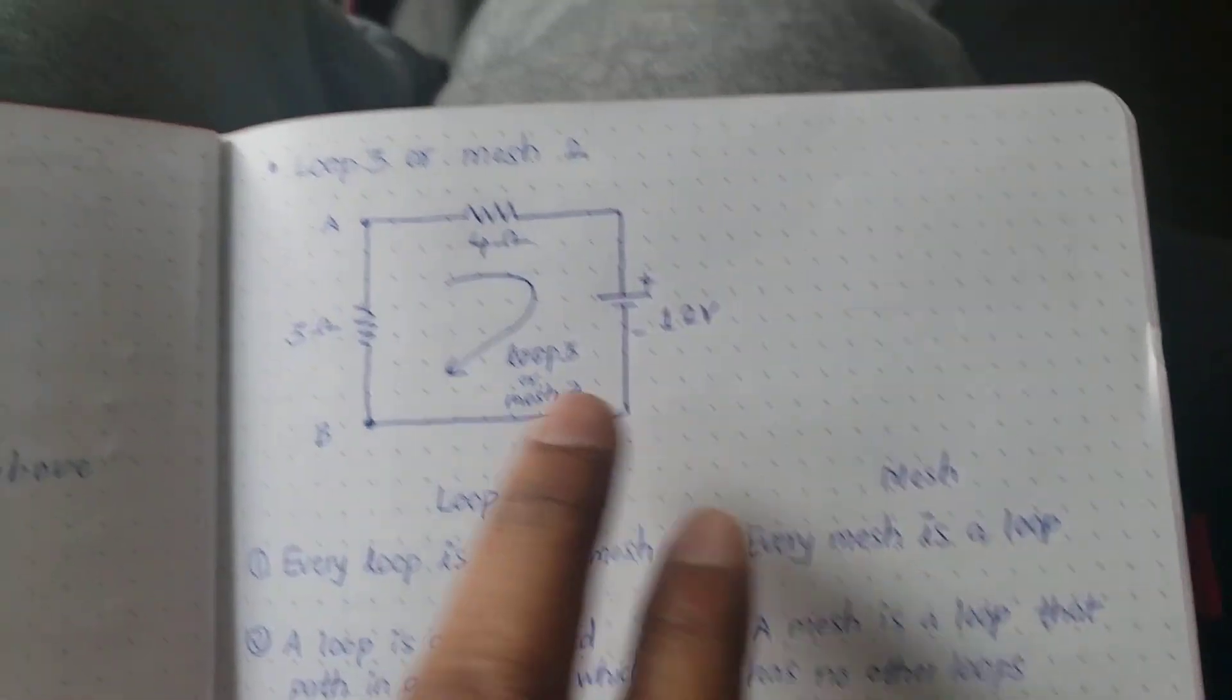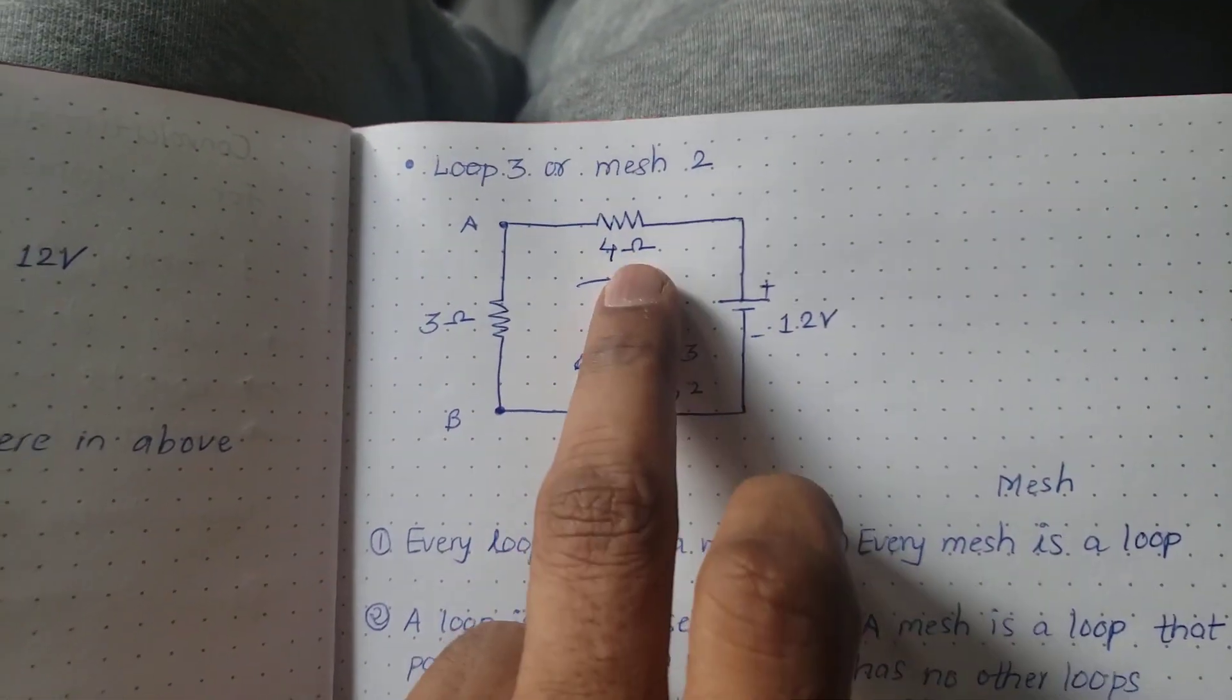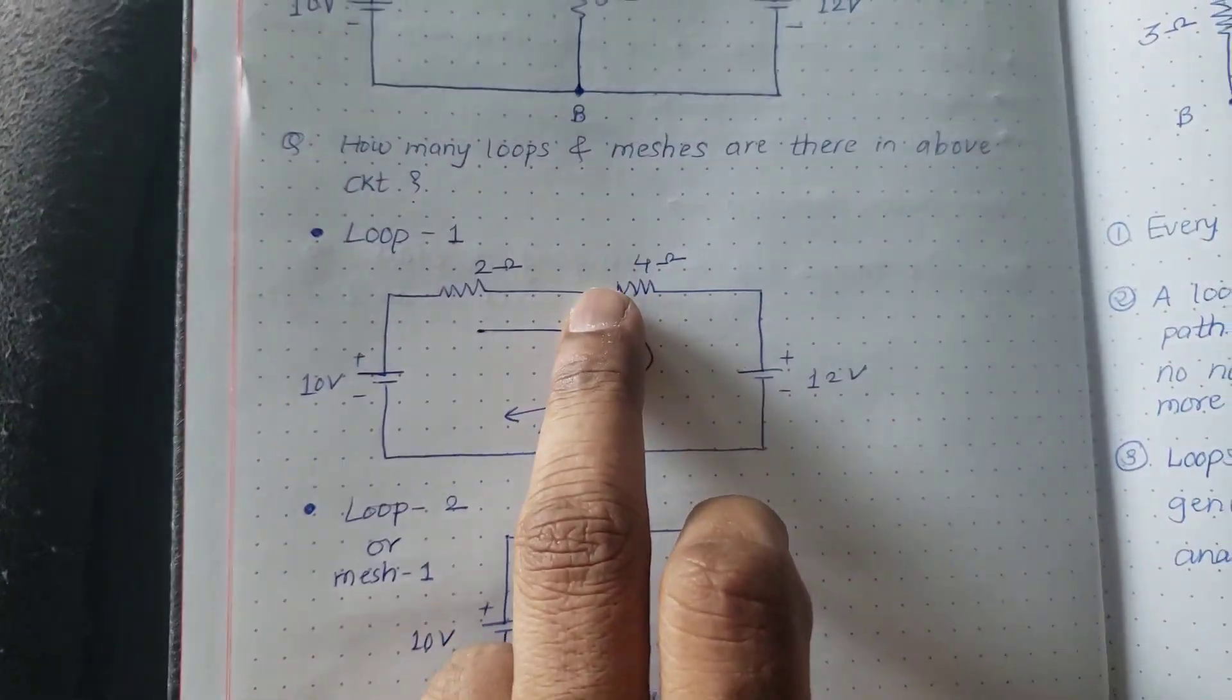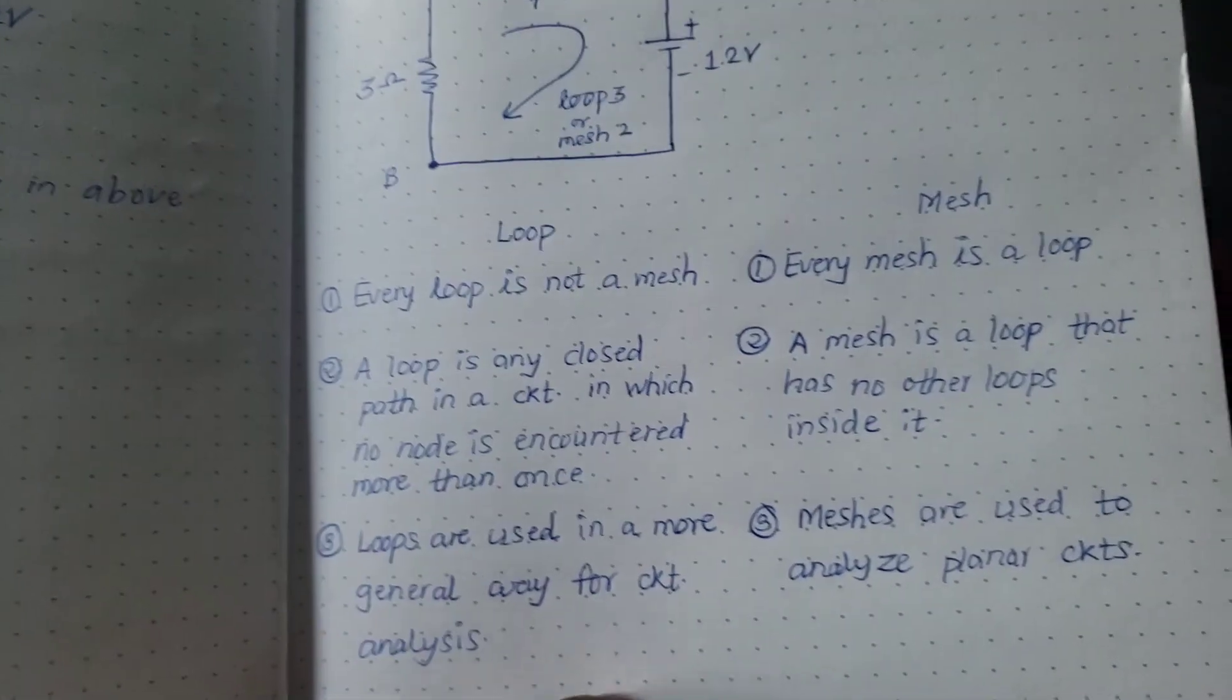So that's the reason we are saying every loop is not a mesh, but every mesh is a loop. You can see this is a mesh and this is loop also. This is a mesh, this is a loop also. This is not mesh but this is a loop.